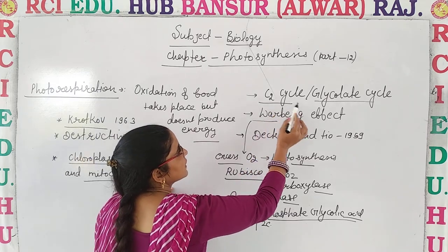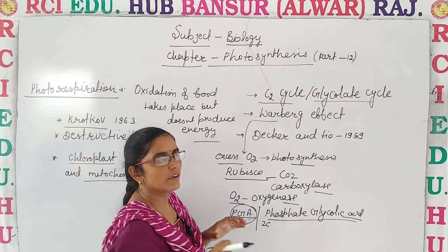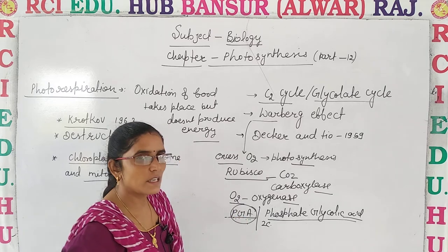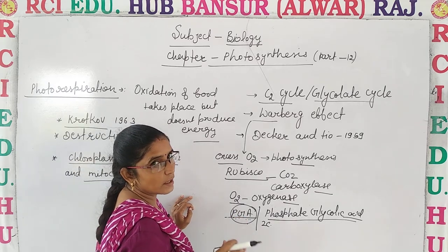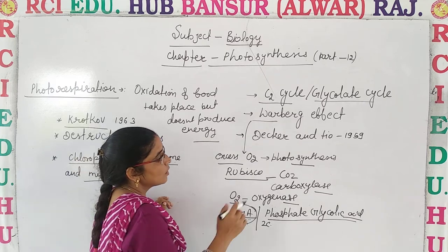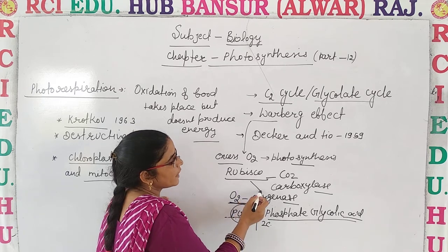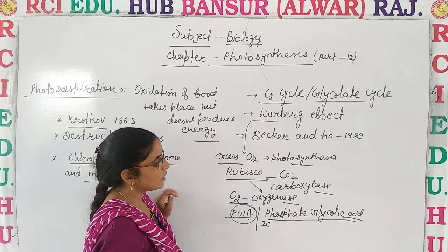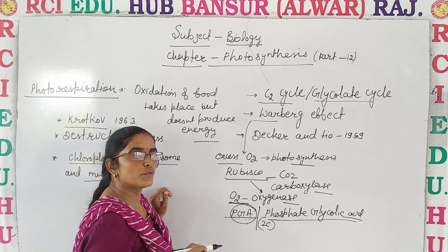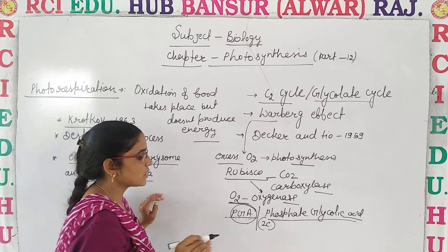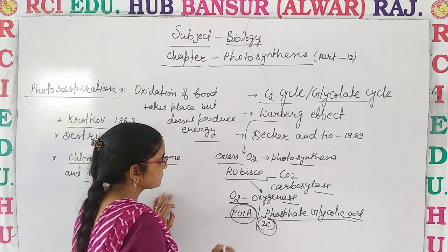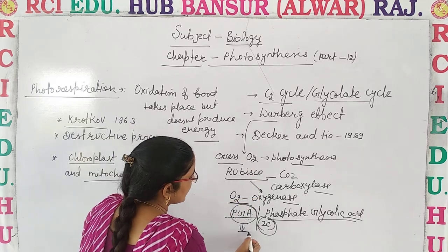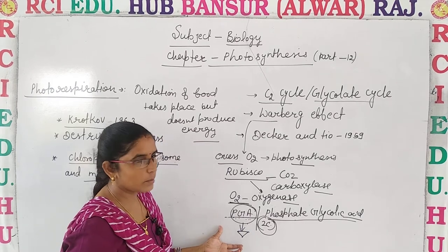C2 cycle or glycolate cycle — the Warburg effect. Otto Warburg noticed that when excess CO2 is present, Rubisco acts as a carboxylase enzyme. But in excess of O2, the rate of photosynthesis decreases. Because in excess oxygen, Rubisco acts as an oxygenase and produces phosphate glycolic acid, which is a 2-carbon compound. Hence the cycle is known as the glycolate cycle or C2 cycle. This is also known as the Warburg effect because CO2 assimilation is reduced.